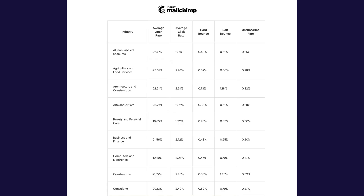So for someone like MailChimp to say that an architecture brand can expect a click-through rate of 2.51% but a beauty brand should only expect 1.92% — this is interesting on one level, but on a practical level it's meaningless. Remember, conversion rates are a diagnostic measure. They help you understand what's going on in your customer journey. They're not an end in themselves.